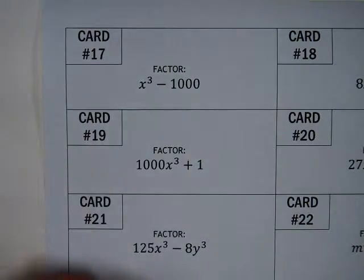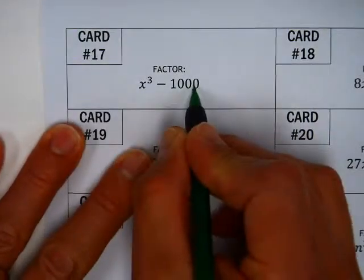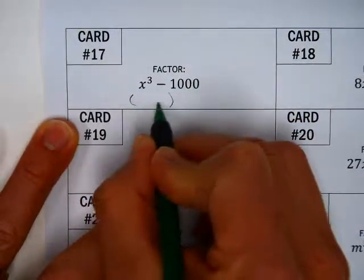We're going to do a couple of these difference and sum of two perfect cube things. These are both perfect cubes, so they will factor initially to be a binomial.